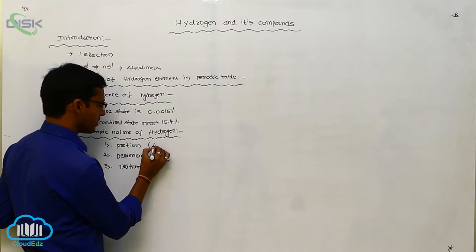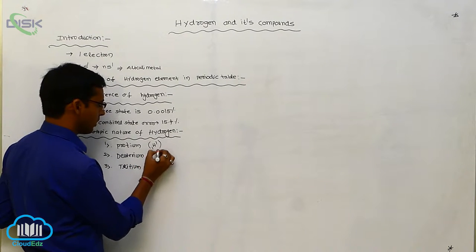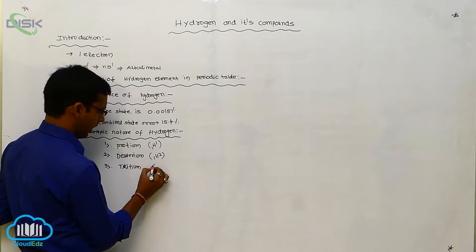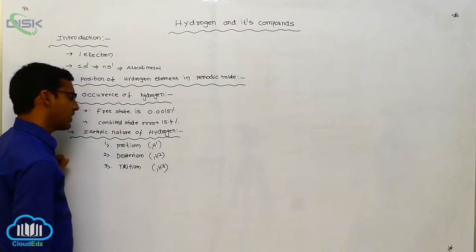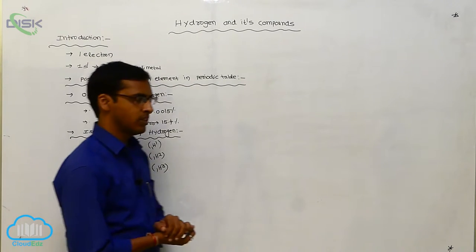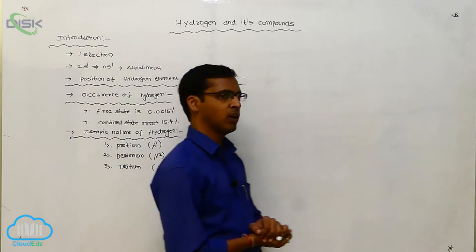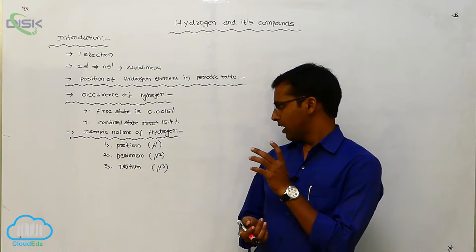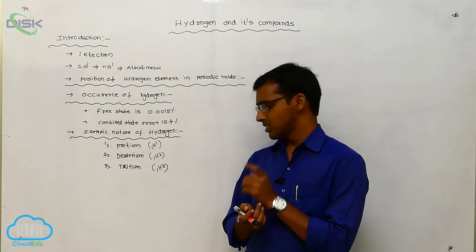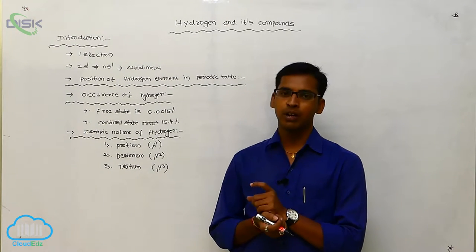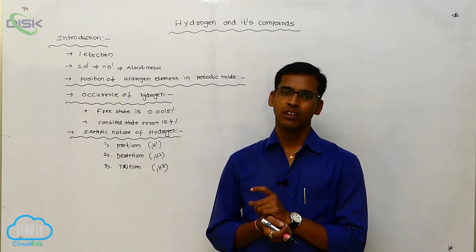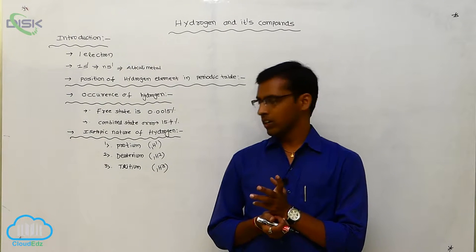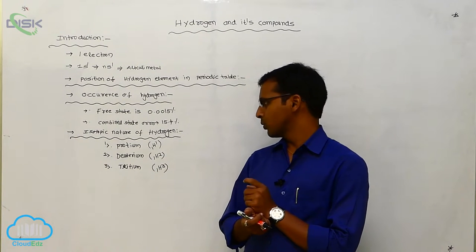The formula for protium is 1H1, deuterium is 1H2, and tritium is 1H3. These are the isotopes of hydrogen — meaning same atomic number but different mass number. That is called an isotope.